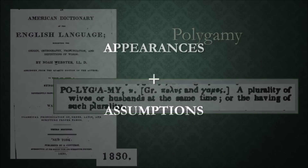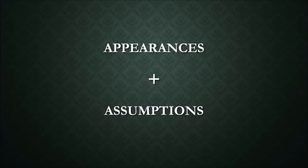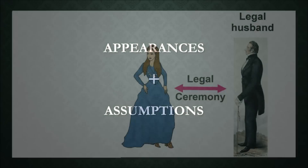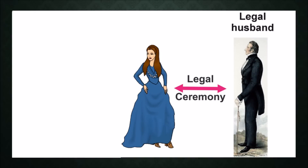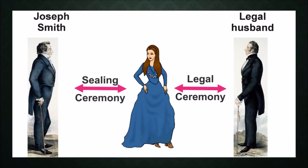The primary evidence presented in the CES Letter to support the claim that Joseph Smith practiced polyandry is primarily appearances and assumptions. Because the women were legally married at the time of their sealing to Joseph Smith, it appears that the woman had two husbands. But in actuality, did the sealing ceremony create a second husband?